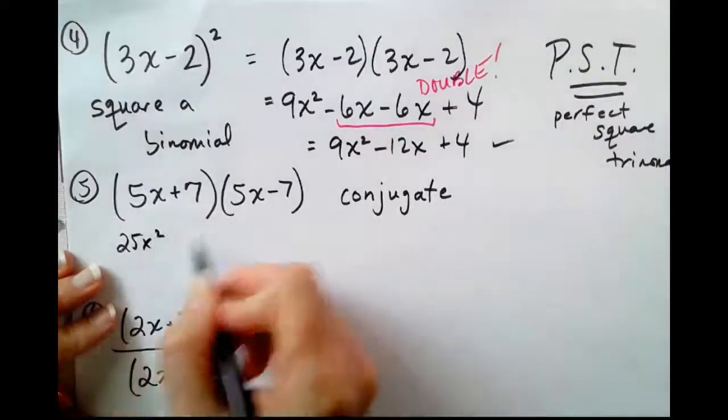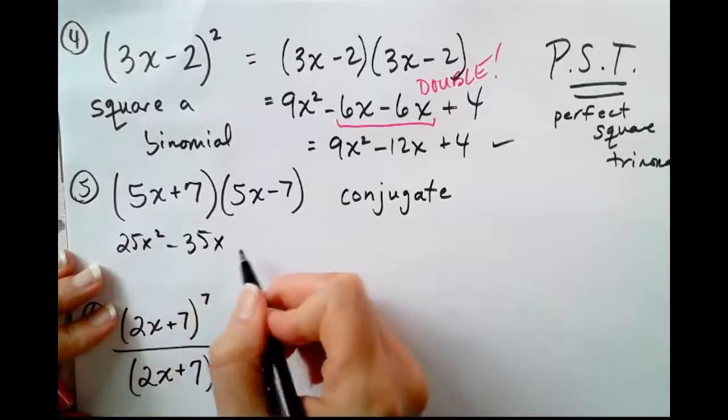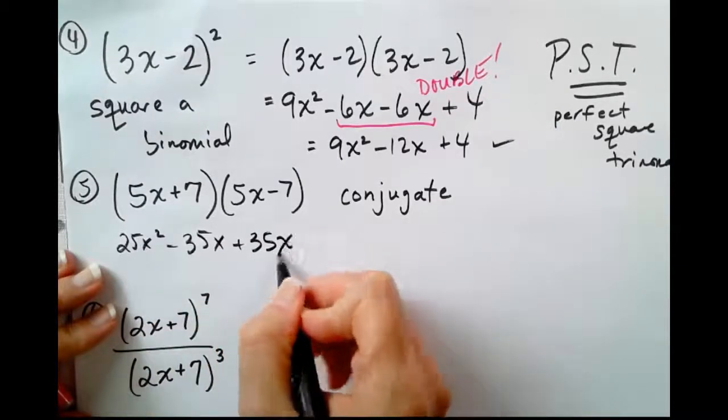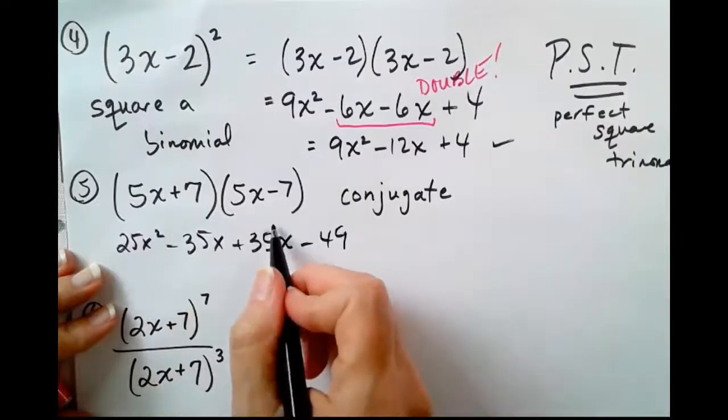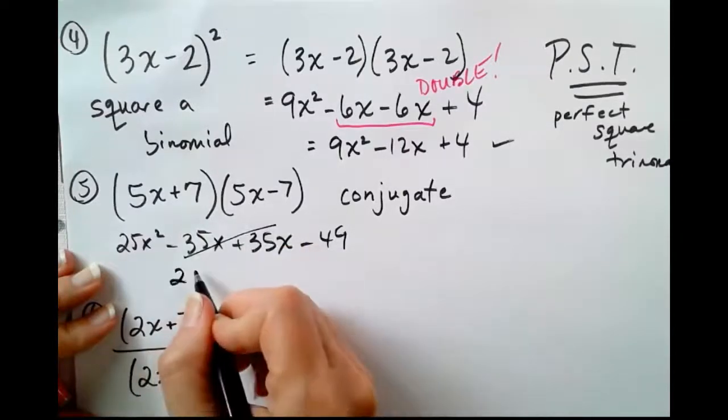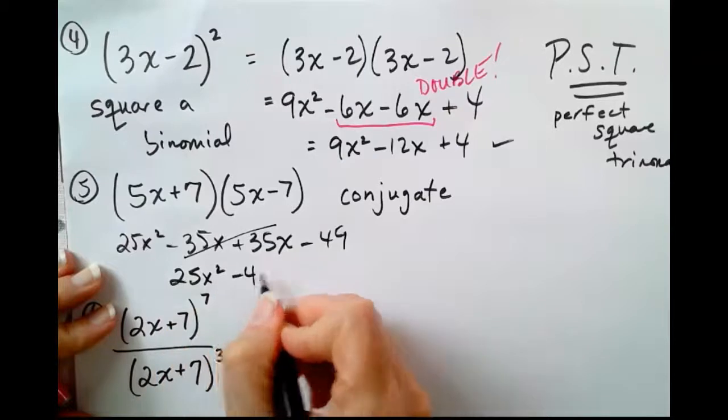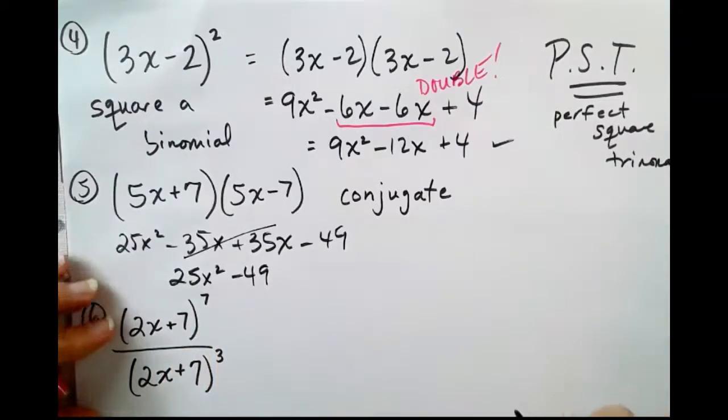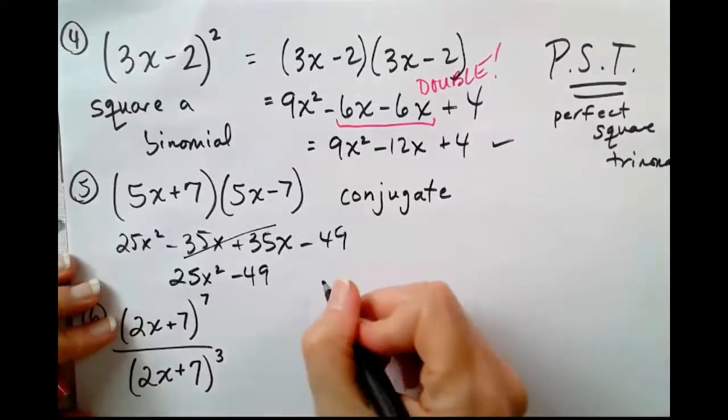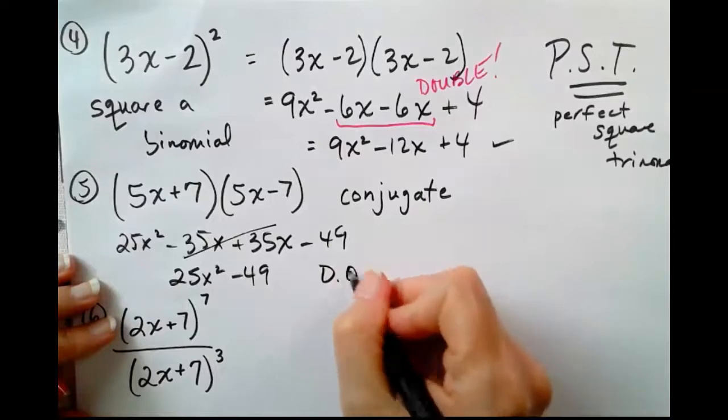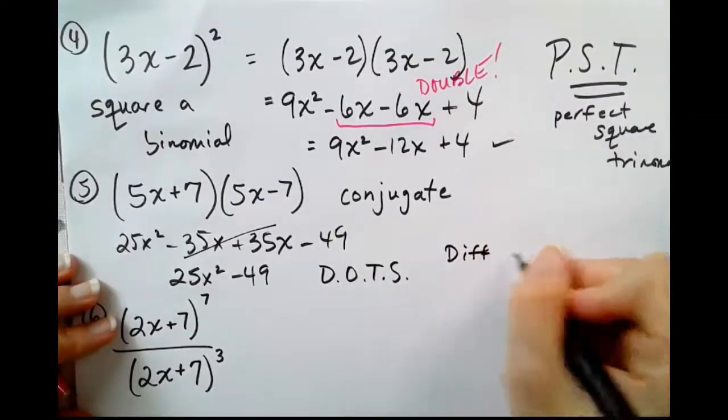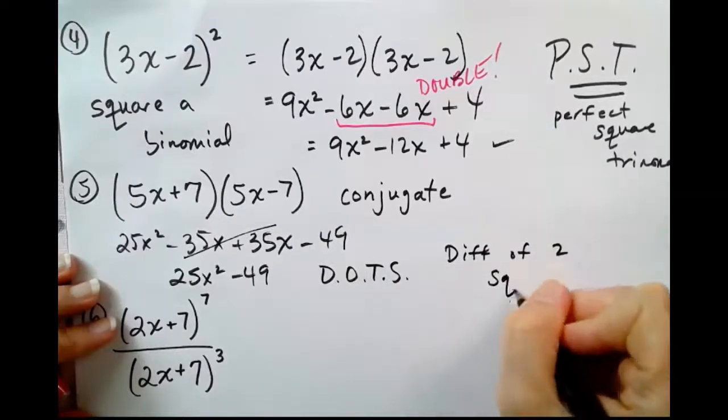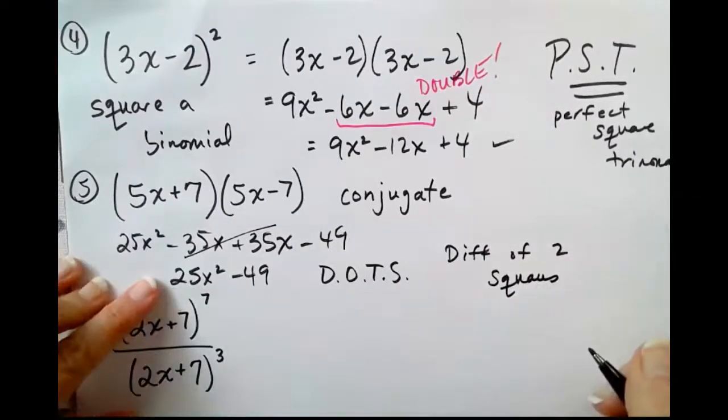First sides, outsides, insides, and last sides. A negative 35, positive 35. They cancel, and we get 25x squared minus 49. Hopefully, that looks very familiar from Algebra 2 because that is the D-O-T-S, the difference of two squares when we multiply it together.